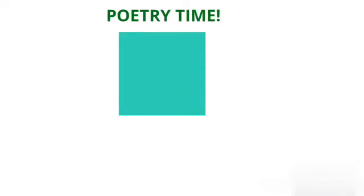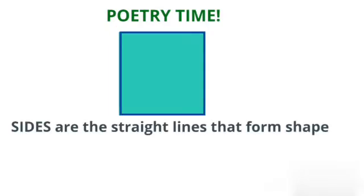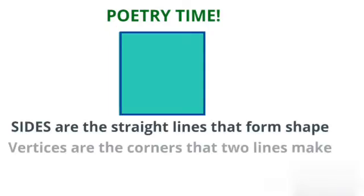Let's learn in the form of poetry. Sides are the straight lines that form shapes. What is at the corner that two lines make? Sing with me. Sides are the straight lines that form shapes. What is at the corner that two lines make?